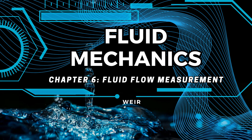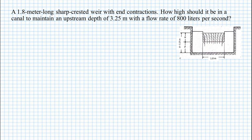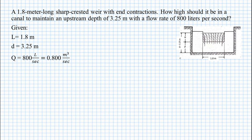Today, we are going to solve a sample problem in Chapter 6 of Fluid Mechanics, the Fluid Flow Measurement. The problem is: a 1.8-meter-long sharp-crested weir with N-contractions — how high should it be in a canal to maintain an upstream depth of 3.25 meters with a flow rate of 0.800 cubic meters per second? The given values are: length equal to 1.8 meters, depth equal to 3.25 meters, and flow rate equal to 0.800 cubic meters per second.